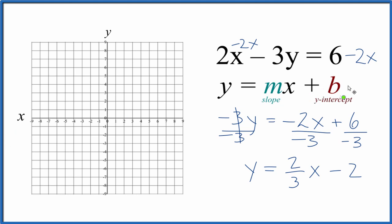So B, the y-intercept, that's negative 2. So we'll go down here, and that's where the line is going to cross the y-axis. That's the y-intercept.